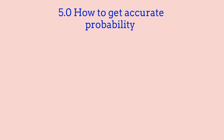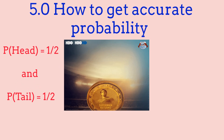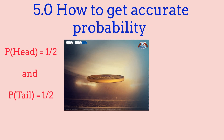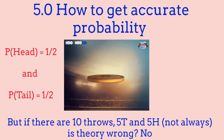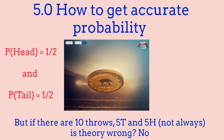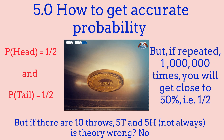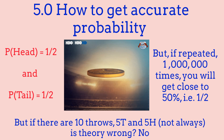Now let's go over how to get accurate probability. Take the example of the coin: if we toss it, we have a 50-50 chance of getting heads or tails. But if we flip the coin 10 times, it's not always true that we'll get exactly 5 heads and 5 tails — sometimes we might get 10 tails and 0 heads, or 7 tails and 3 heads. But if we repeat that same process a million times, it's going to get really close to 50%. Basically, the more you do it, the more accurate your probability will become.